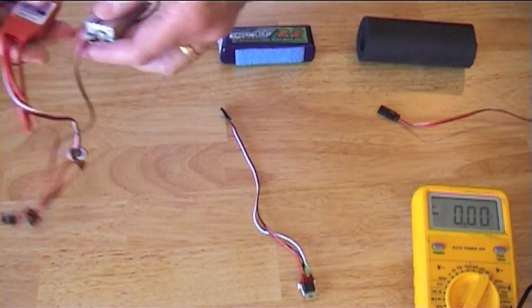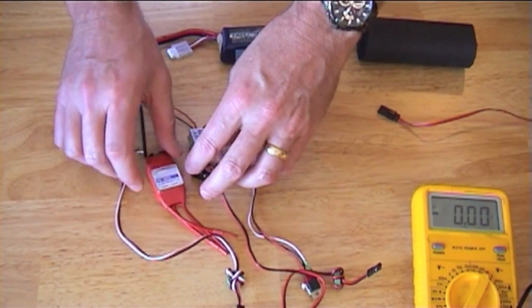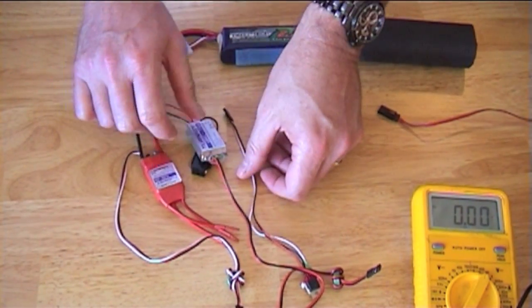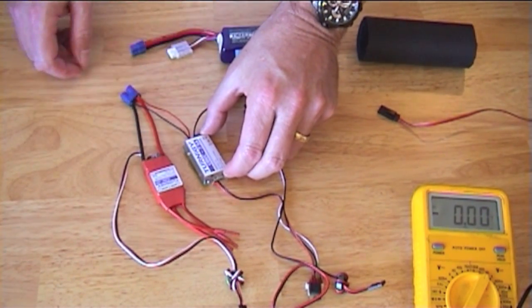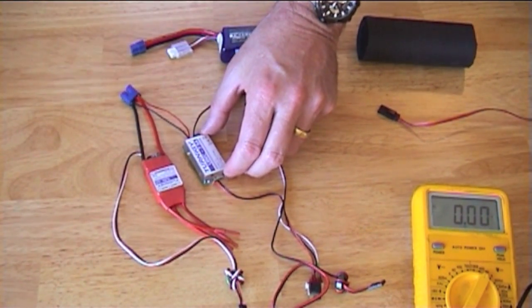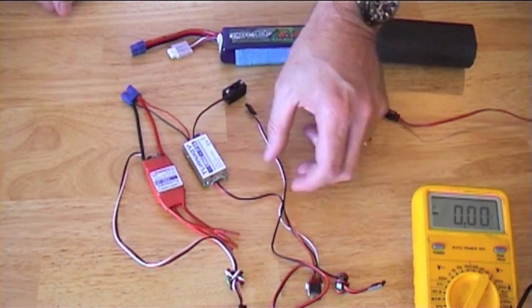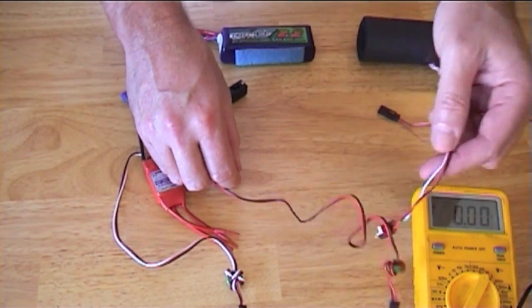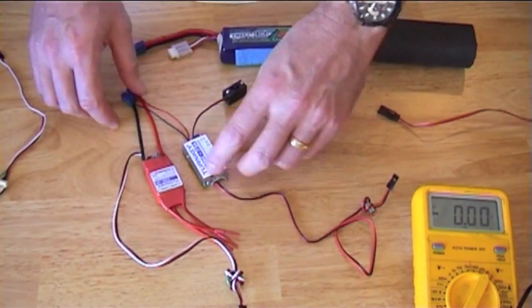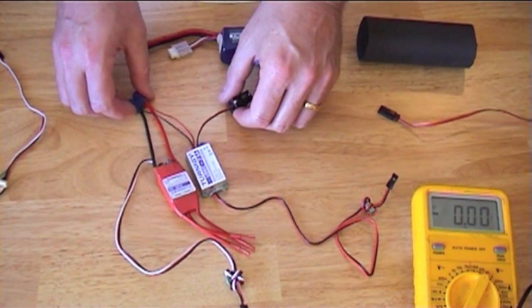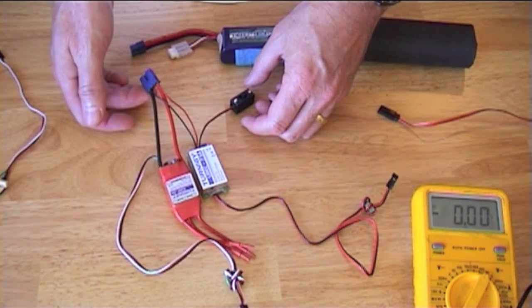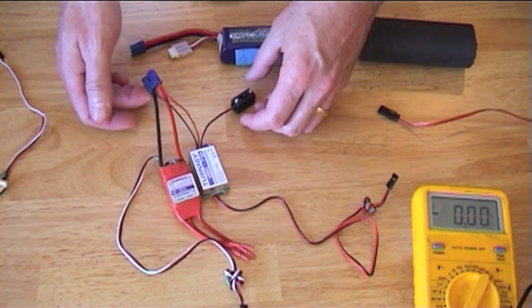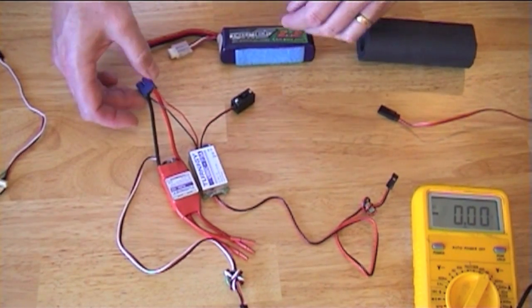I have my ESC, 40 amp plush ESC, and a Turnigy UBEC 7.5 amp max but 5 amp operating. I have them connected to a single EC3 plug. They don't have to be, you can have them on separate batteries if you like. I choose to have mine on one battery.